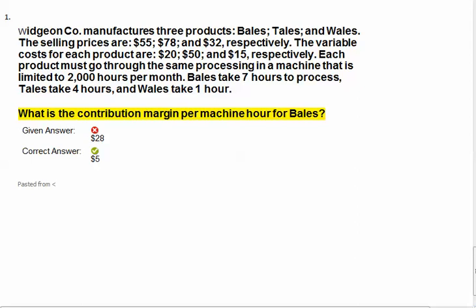It says Widgen Company manufactures three products: bales, tails, and whales. The selling prices are $55, $78, and $32, respectively. The variable costs for each product are $20, $50, and $15, respectively.